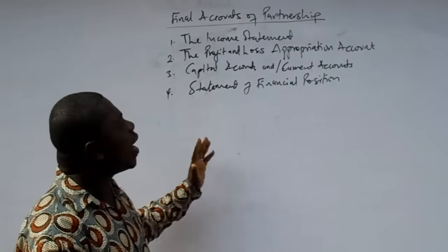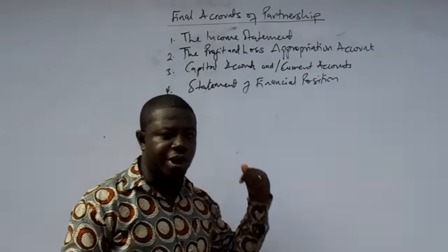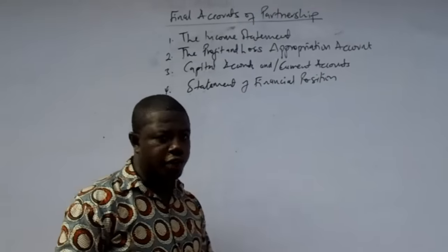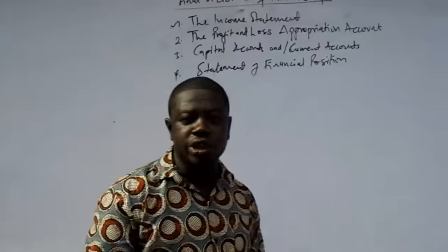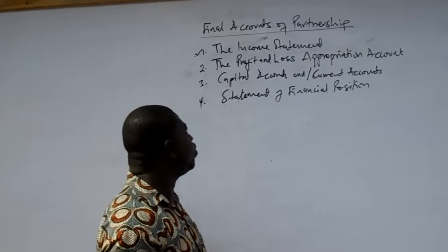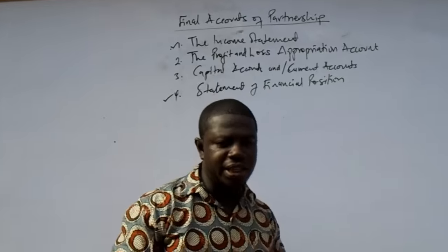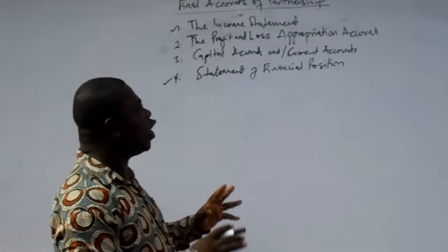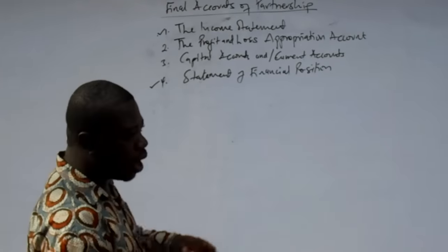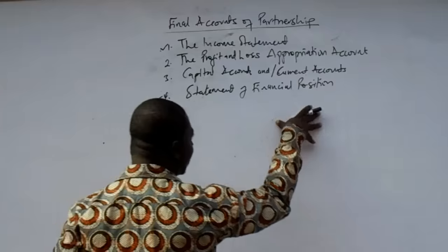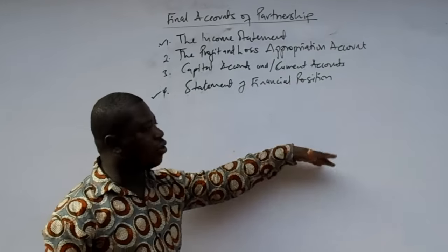These are the accounts we are going to prepare for the final account of the partnership business. The income statement has been dealt with already — you can refer to my previous video on the final account of a sole trader, as the format is not different. The statement of financial position has also been dealt with. The only difference is where we record the finance by — the sources of finance items will have a different style of presentation for the partnership.